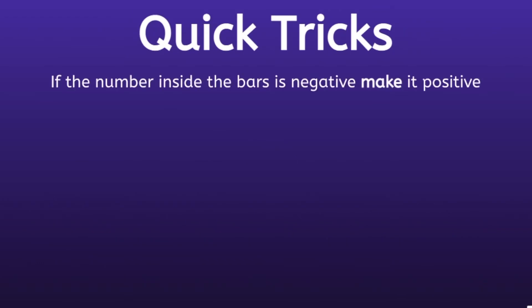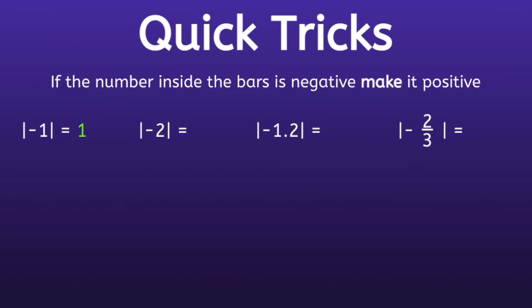Quick tricks! If the number inside the bars is negative, make it positive. So the absolute value of negative 1 is positive 1. The absolute value of negative 2 is positive 2. The absolute value of negative 1.2 is positive 1.2. And the absolute value of negative 2 thirds is positive 2 thirds.